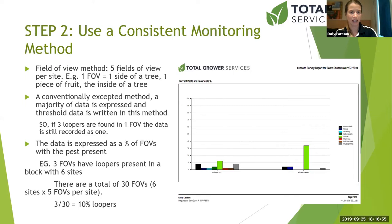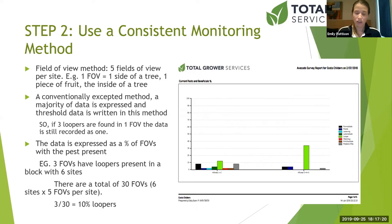If you have a block with six sites and each site has five fields of view, and three of those fields of view have loopers, it will be expressed as 10%. Here on the side I've got a graph produced based on percentages of different pests using the threshold method.